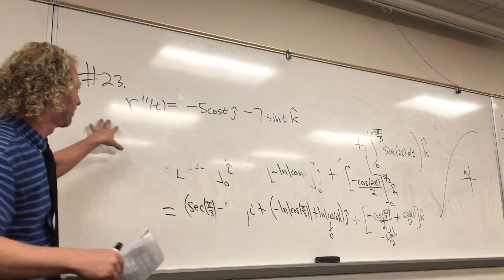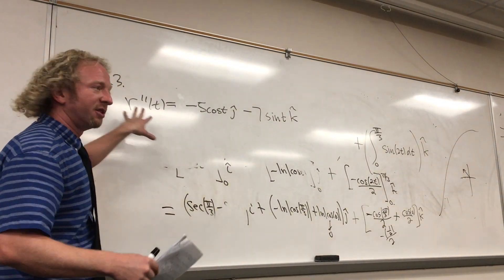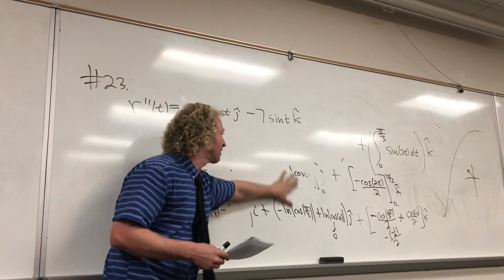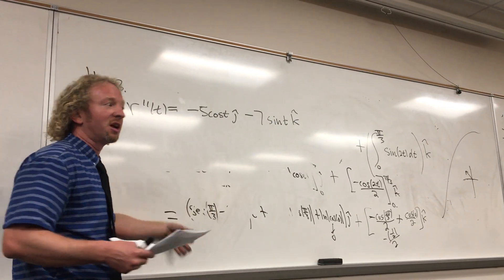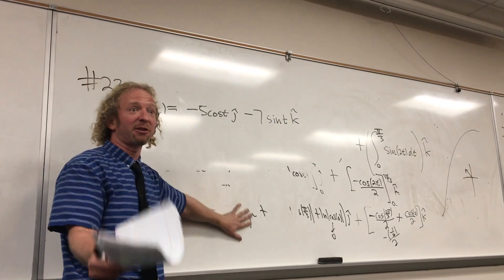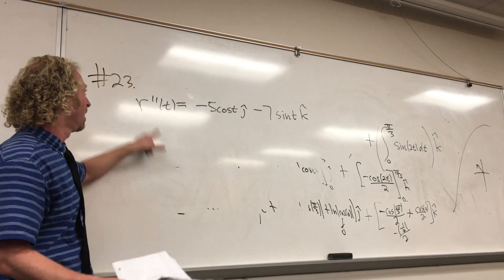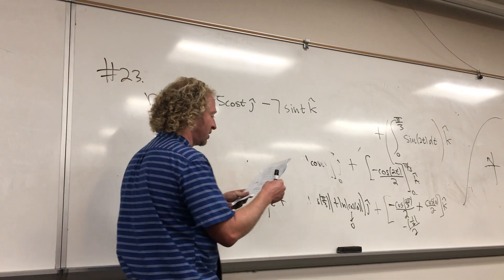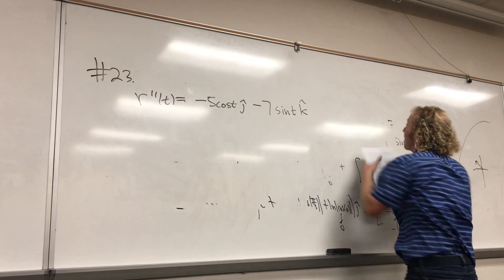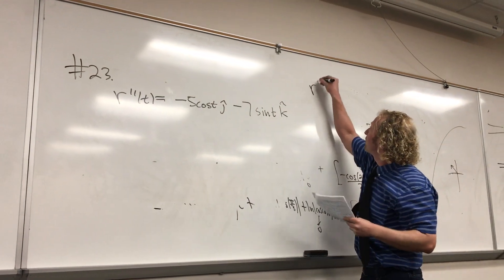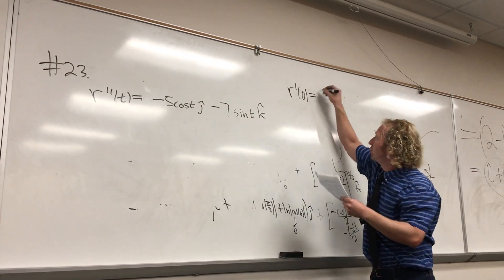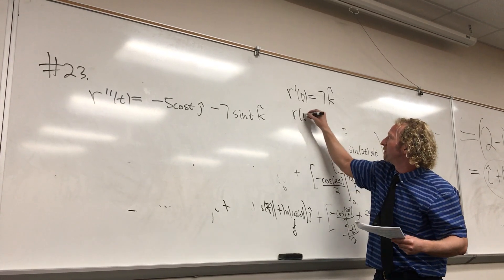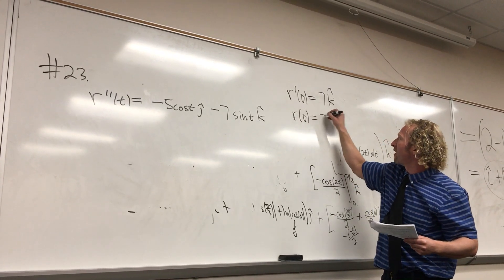And so that's a derivative, right? It's a second derivative, and we have a function r. So this is actually — you can think of this as a differential equation, right? You have an unknown function, a vector-valued function r, and one or more of its derivatives. And they give us some conditions: r prime of 0 is equal to 7k hat, and r of 0 is equal to 5j hat.